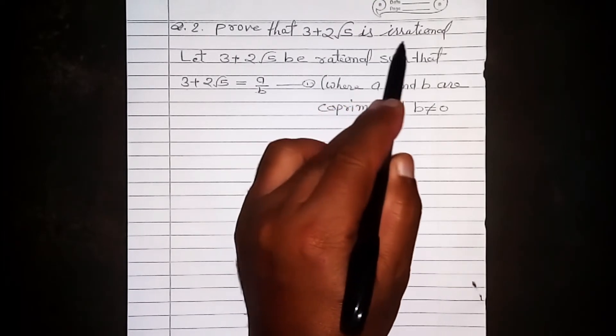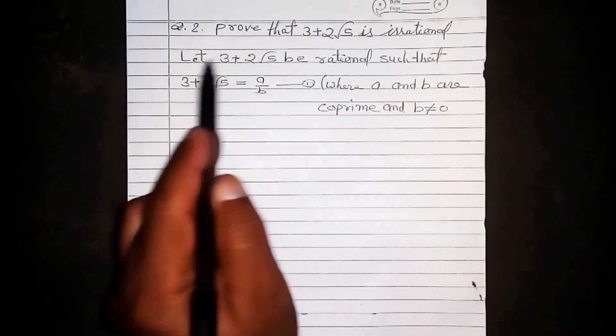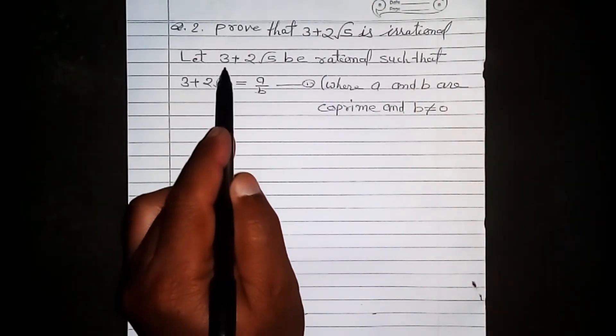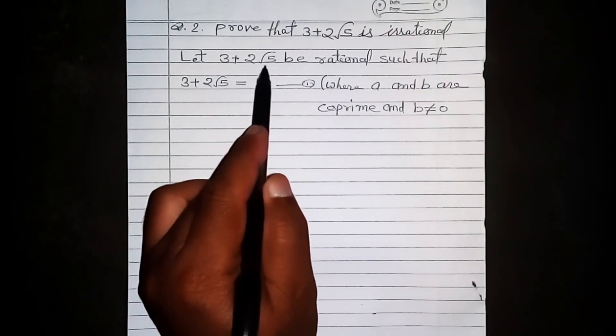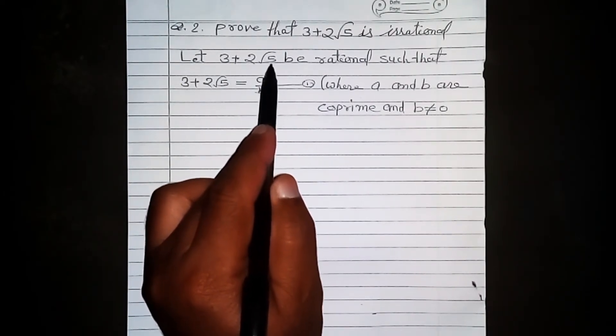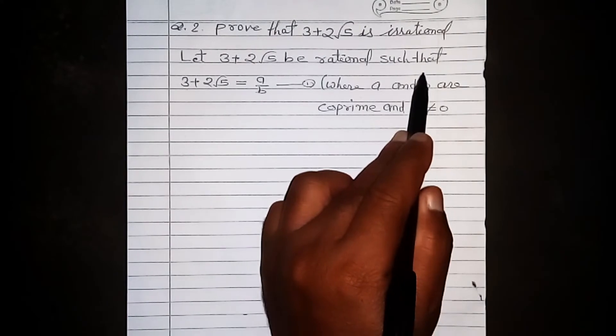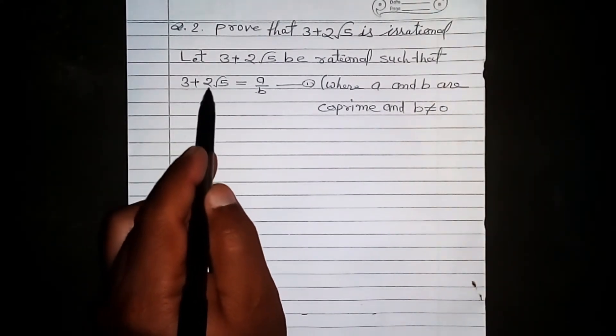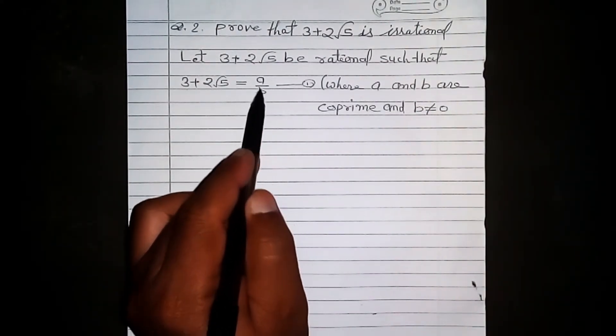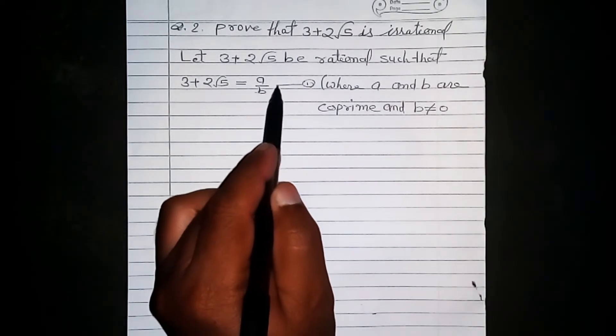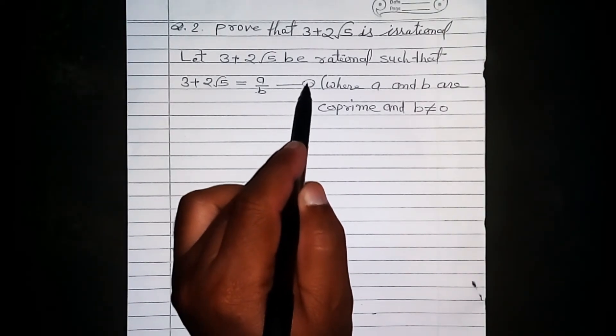Let us assume to the contrary that 3 plus 2 root 5 is rational, such that 3 plus 2 root 5 is equal to a by b. Let us mark it as equation number one.